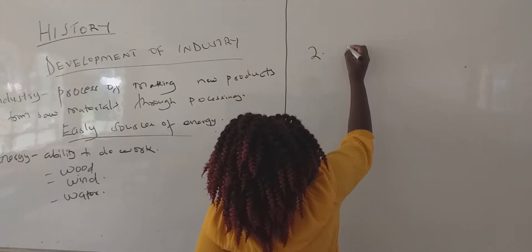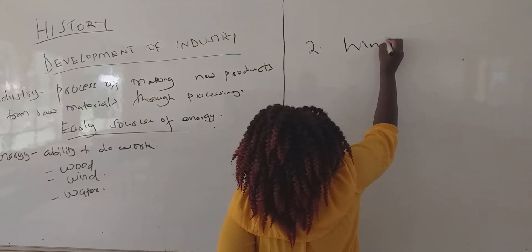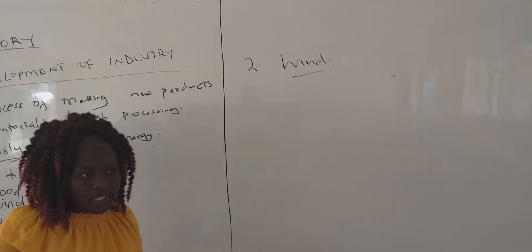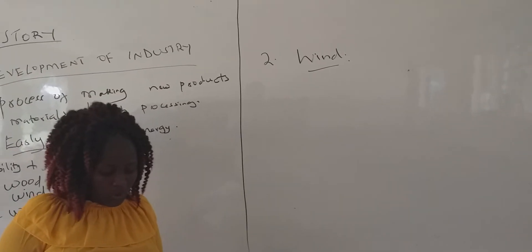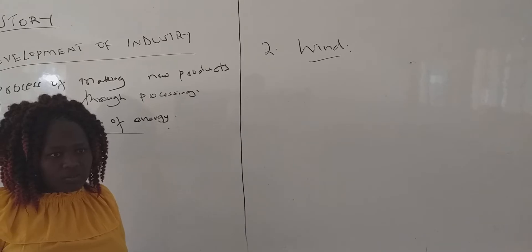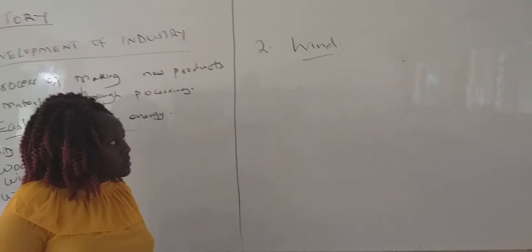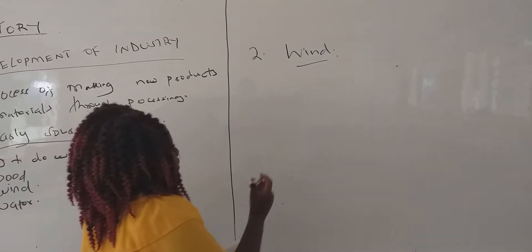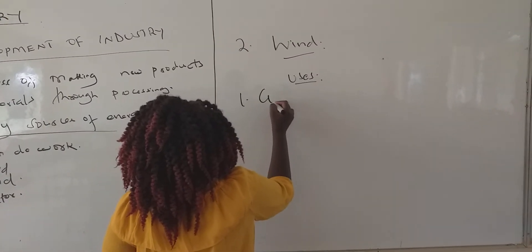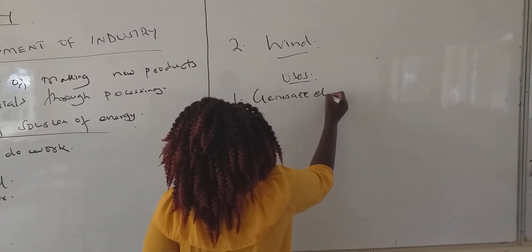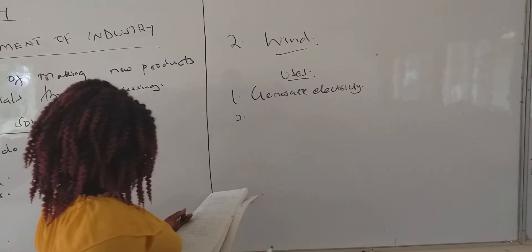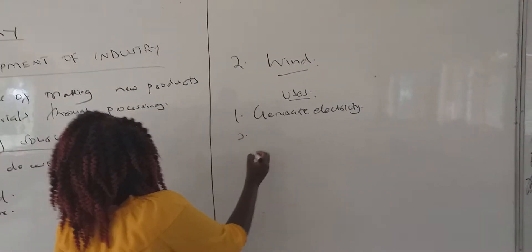Our second early source of energy is wind. You already know what wind is, so let's look at the uses of wind. Use number one: it is used to generate electricity.